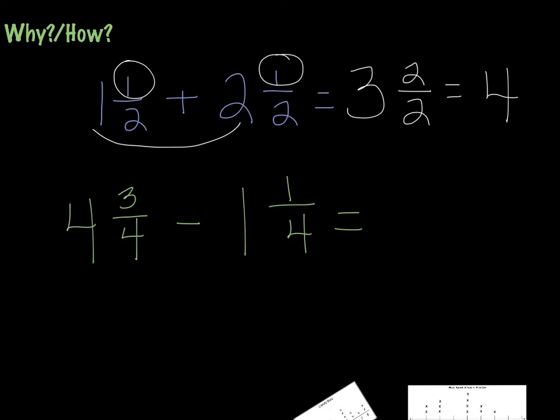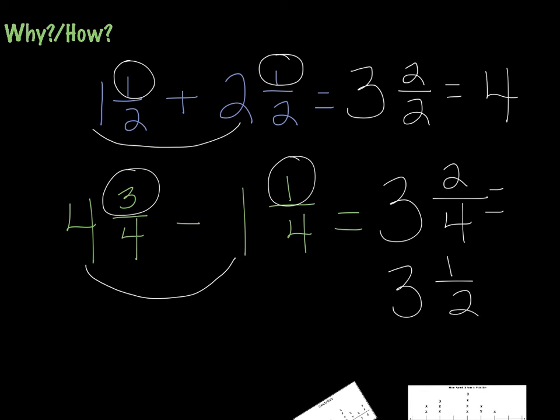Let's take a look at the bottom question: 4 and 3 fourths minus 1 and 1 fourth. I'm going to do my 4 minus my 1, which gives me 3. Again, I have the same denominator with my fractions. So I'm going to subtract 3 minus 1, which gives me 2, and bring my denominator over, 3 and 2 fourths. And we all know that 2 fourths is equivalent to 1 half, so that would also be 3 and 1 half.